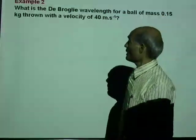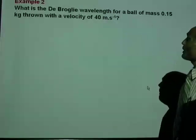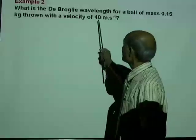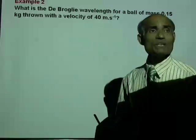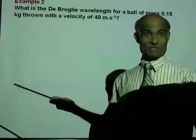A small problem. What is the de Broglie wavelength of a ball of mass 0.15 kilogram thrown with a velocity of 40 meter per second? That will be interesting. It's a very simple problem.